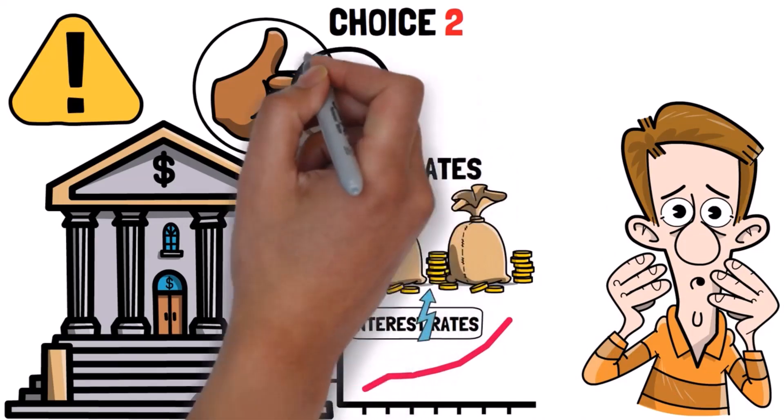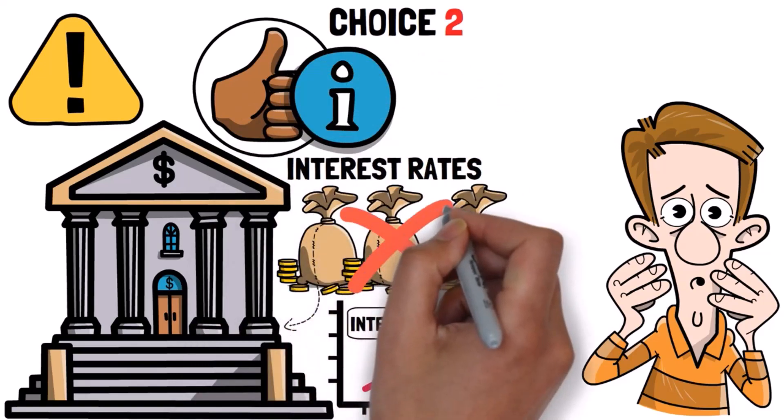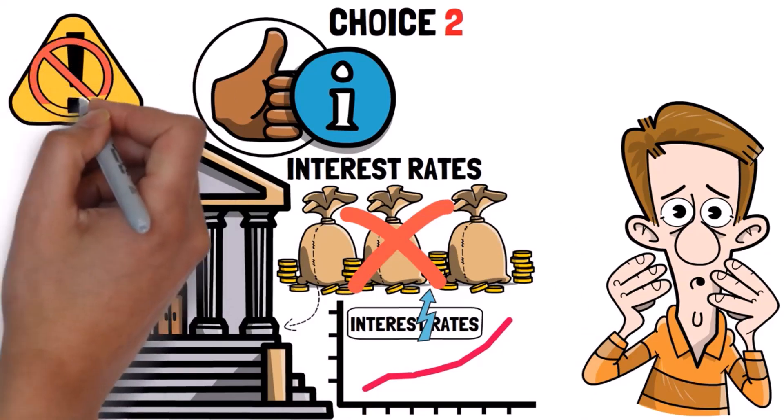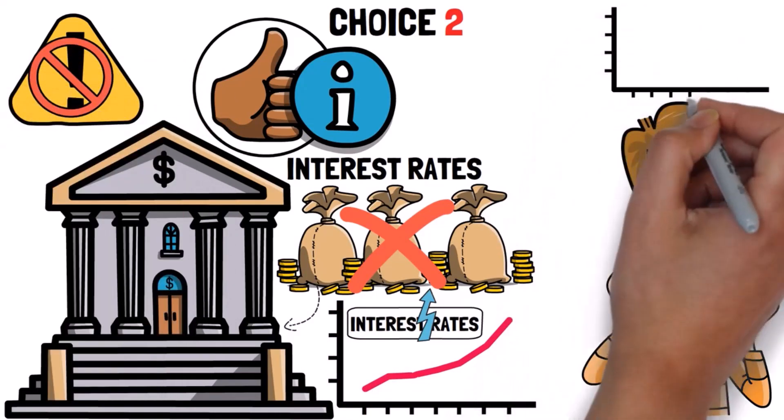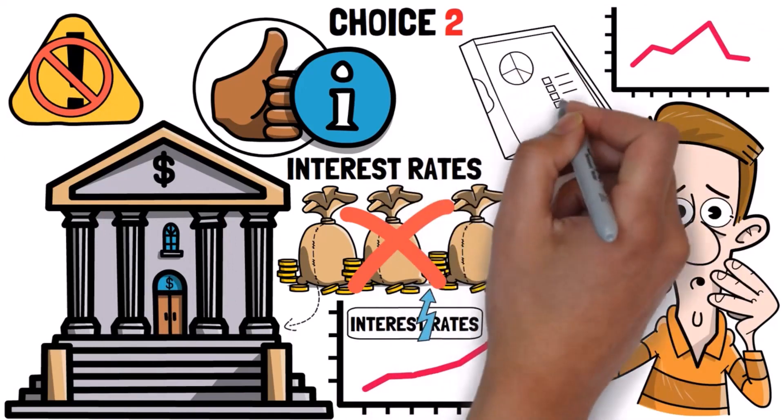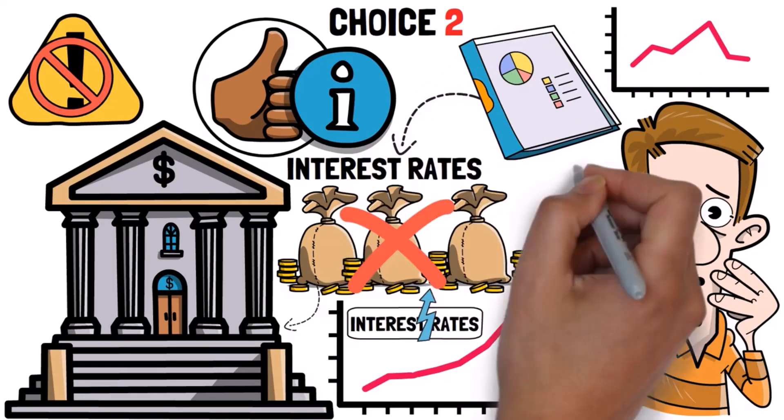People made decisions during the good times that they wouldn't have made without all that extra money around. This is a bit like finding out that something was wrong during the good times and it becomes clear when things start going bad. So the damage is actually done during the good times when people make decisions based on the wrong information caused by changes in interest rates and the amount of money in circulation.